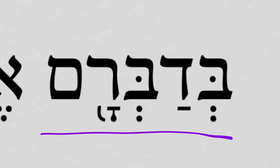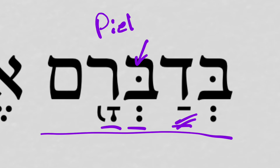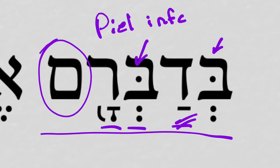Notice we have all three root letters showing: Dalet, Beit, Resh — 'to speak.' And we have a Dagesh in the middle root letter. Now this is a Bagadkafat letter, but notice it's after a vowel sound, so that means it's a strong Dagesh. That tells us we're looking at a Piel, and we have an attached preposition, which helps us know that it's an infinitive construct. And here at the end we have a 3MP pronominal suffix.